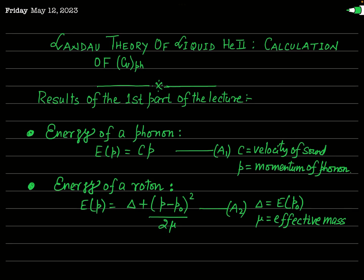In the previous lecture, we started to deal with the problem of Landau's theory of liquid helium 2. In the first part of the lecture, we discussed the important assumptions made by Landau to develop his theory of liquid helium 2, and we have also seen that the specific heat capacity of liquid helium 2 at constant volume is contributed by both excitations — the phonons and the rotons. So in this lecture, our aim is to find the contribution of phonons regarding this specific heat capacity at constant volume.